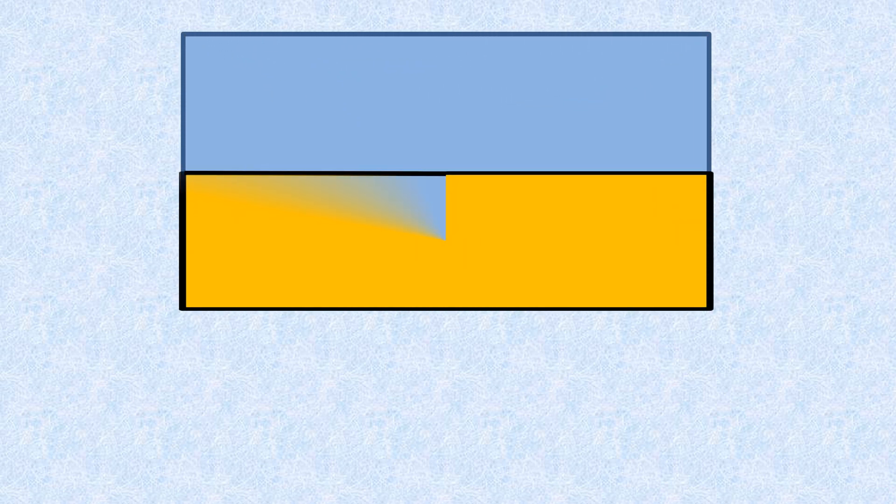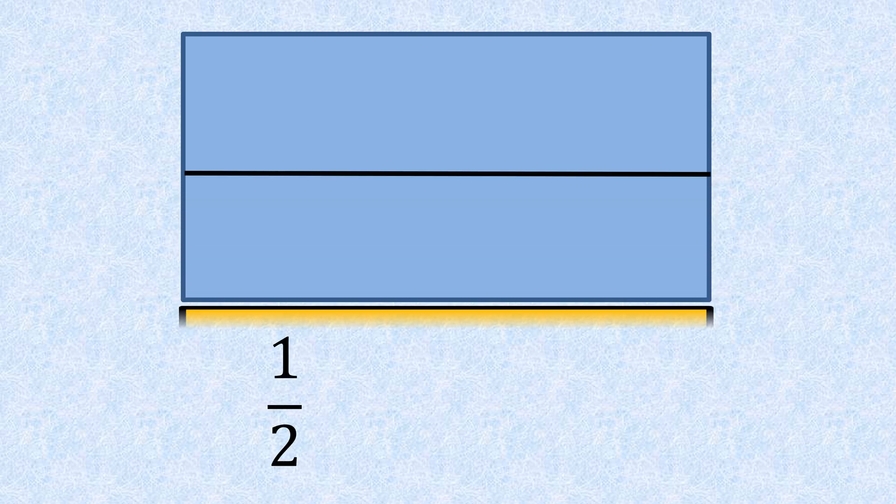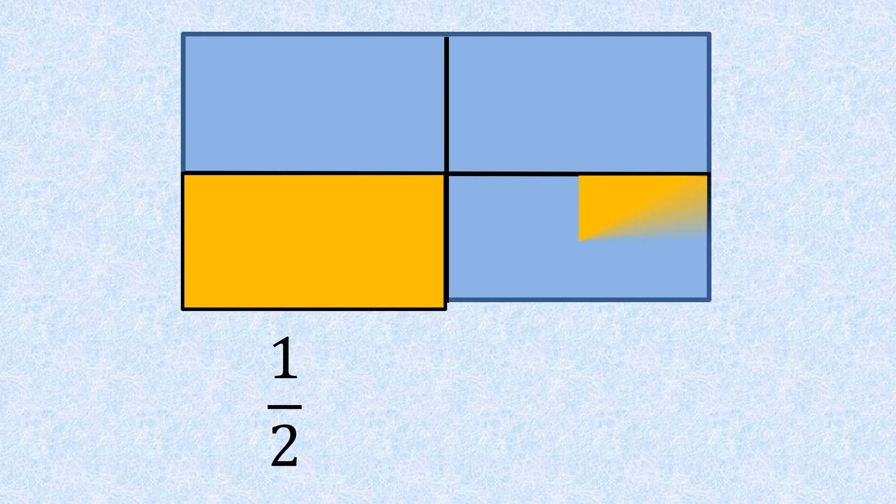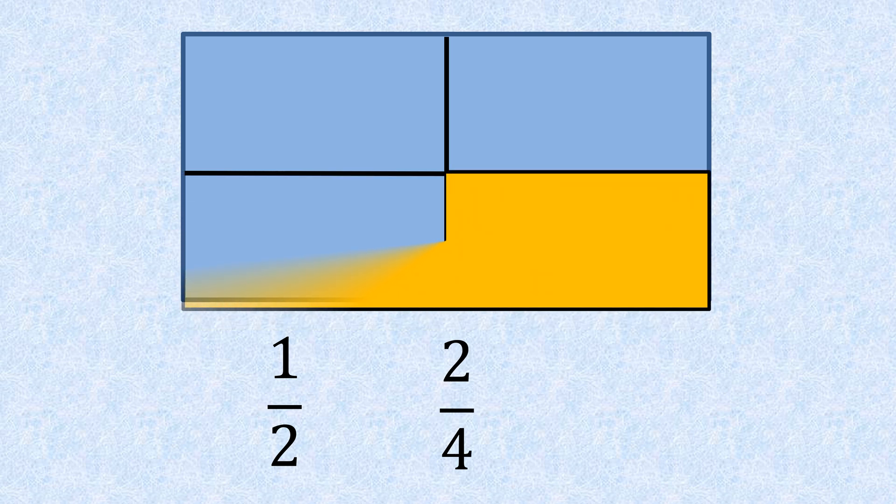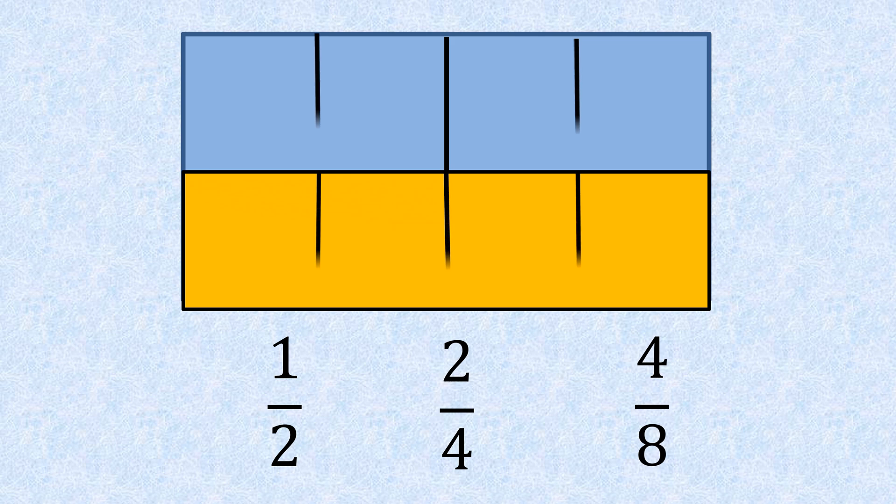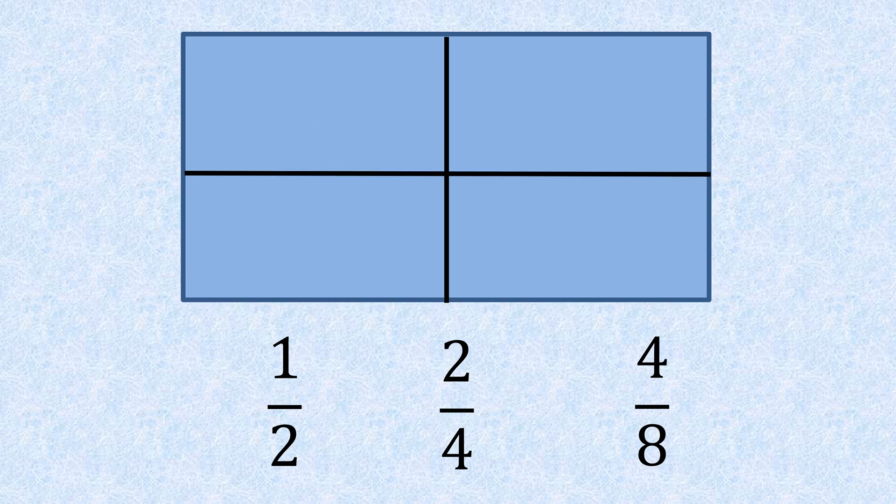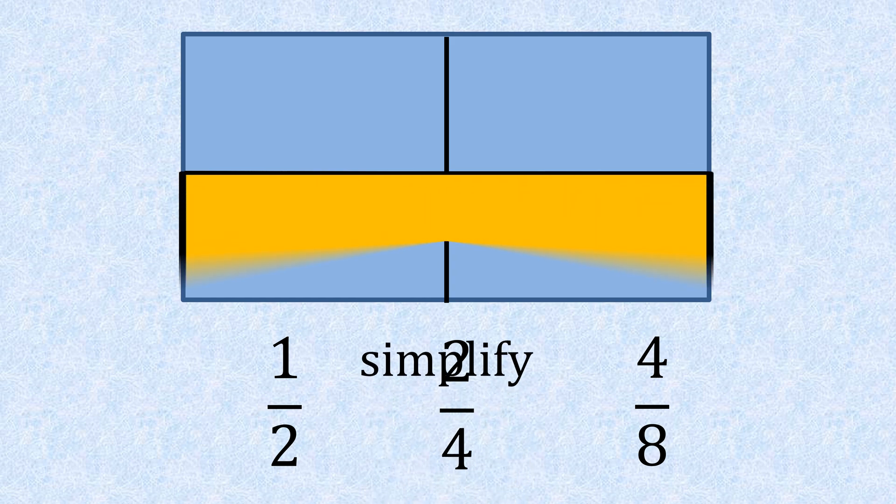If we look at a rectangle and we cut it in half, that gives us the fraction one half. If we cut one half in half, that will give us two quarters. If we cut them down further, we get four eighths. So this means that four eighths could be simplified to one half.